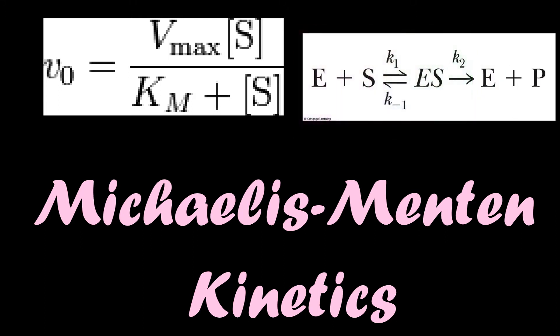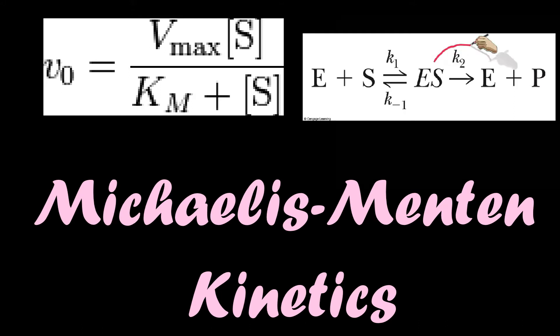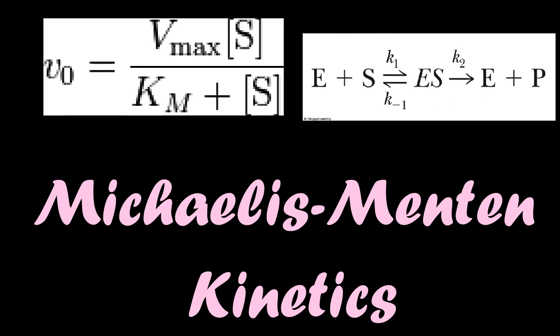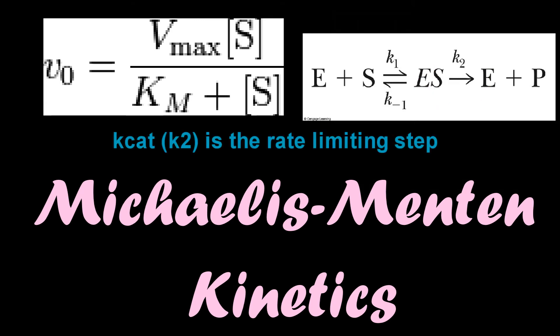The breakdown of the ES complex to form the products is assumed to be slower than: 1, the formation of the ES complex, and 2, the breakdown of ES to reform E plus S. So in other words, K2 — the rate of forming the product — is going to be slower than K1 and K-1. K2 is going to be the rate-limiting step, and that's why we can just focus on it.